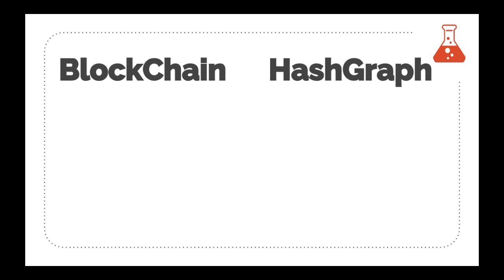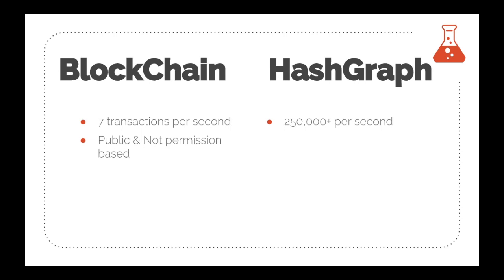Comparing hashgraph with blockchain: the two biggest problems blockchains face are transaction speed and fairness. Bitcoin has a transaction speed of seven transactions per second; Ethereum has about 15 per second. Hashgraphs can process 250,000+ transactions per second, which is a major advantage. Blockchain is public and not permission-based, allowing unknown networks to participate. Hashgraphs currently operate on a private, permission-based network where the number of participating nodes is known beforehand, making a direct comparison somewhat unfair.